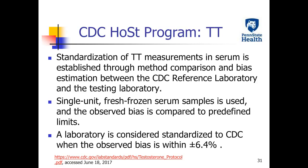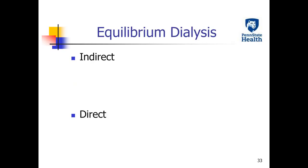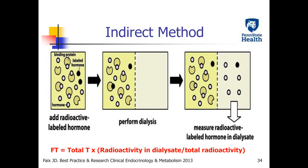To reduce inter-method variability, CDC has developed a total testosterone standardization program. Testing laboratories compare their results with the CDC reference laboratory method results by testing single-unit fresh frozen serum samples. The bias limit is plus or minus 6.4 percent. Regarding free testosterone, there are several ways to measure it, including equilibrium dialysis, ultrafiltration, analog immunoassay, and calculation based on sex hormone binding globulin and albumin.